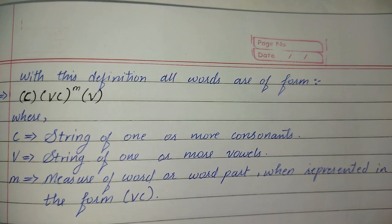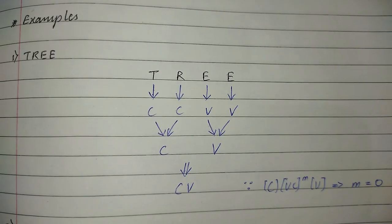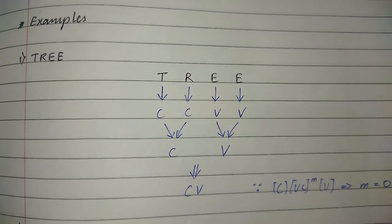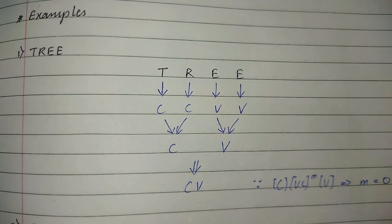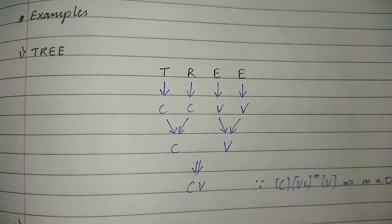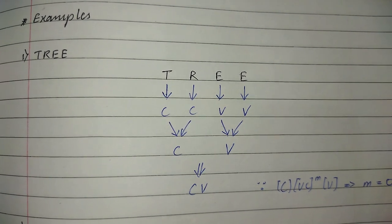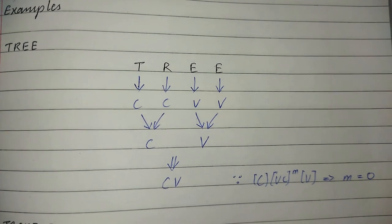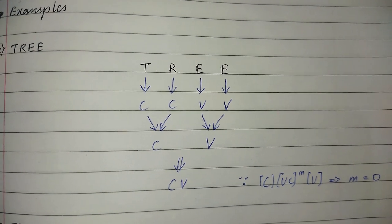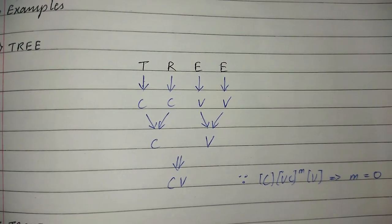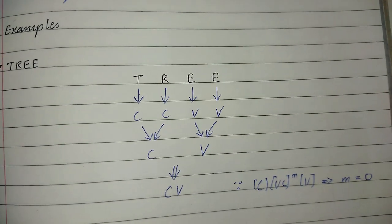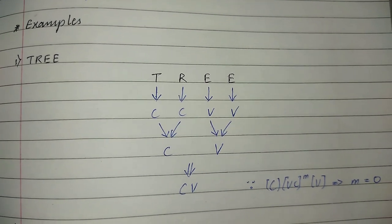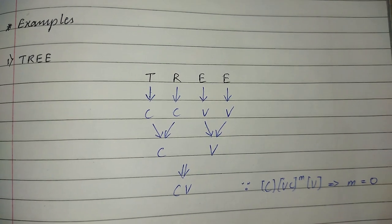First example: we have the word TREE. T is consonant, R is consonant, and E is vowel. If there are two consonants side by side, we consider them as a single C. If there are two vowels side by side, we consider them as a single V. The final output would be CV. We compare this with the formula C, VC raised to m, V. Here there is C, but there is no VC, so VC raised to m equals zero.